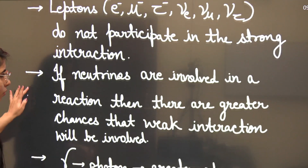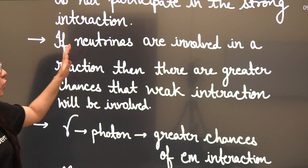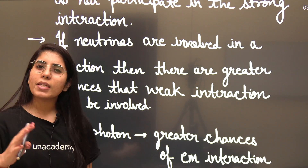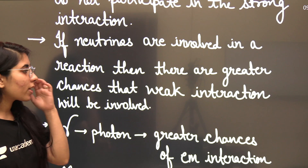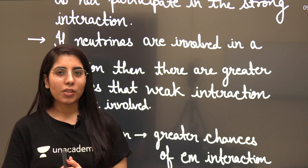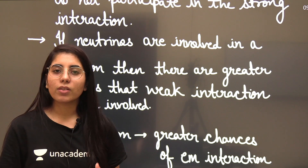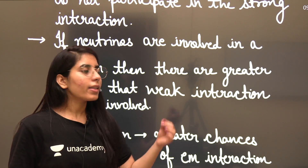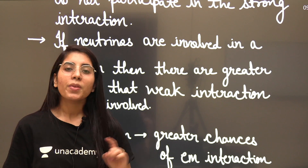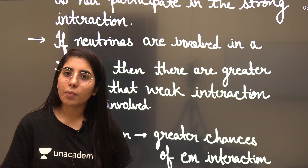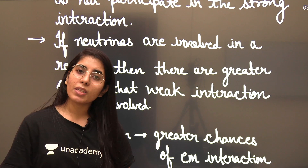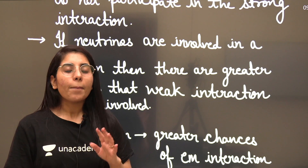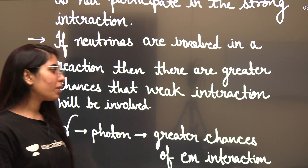The second point is related to the presence of neutrinos. If neutrinos are involved in a given reaction, there are very high chances — approximately 99.5% — that the reaction is taking place via the weak interaction. There can be other factors to verify, such as checking other conservation laws, but the presence of neutrinos is a strong indicator of weak interaction.